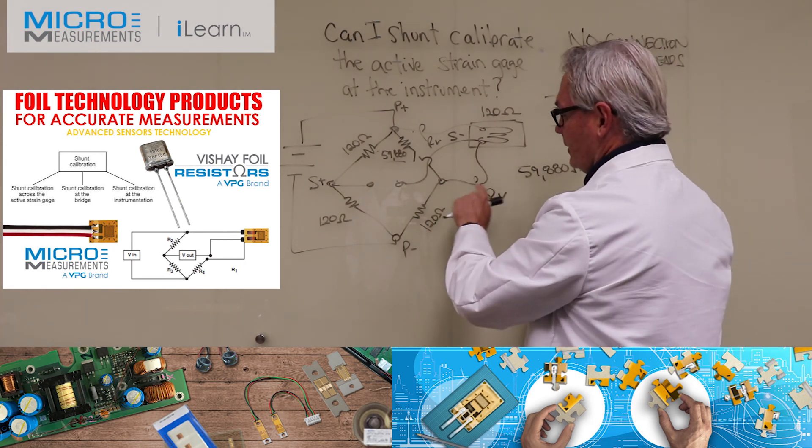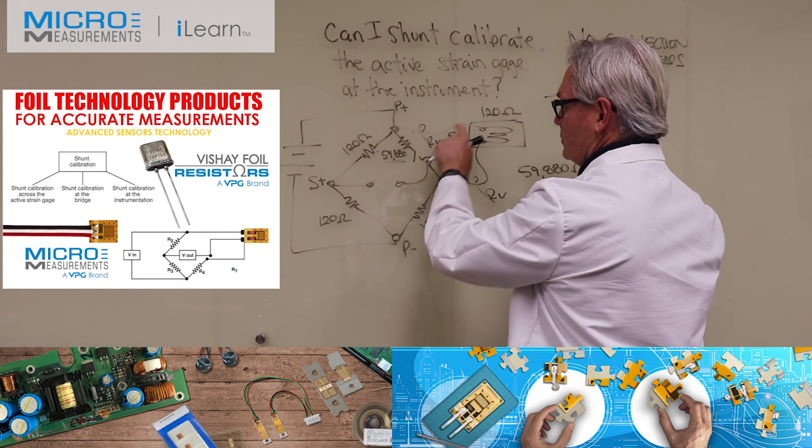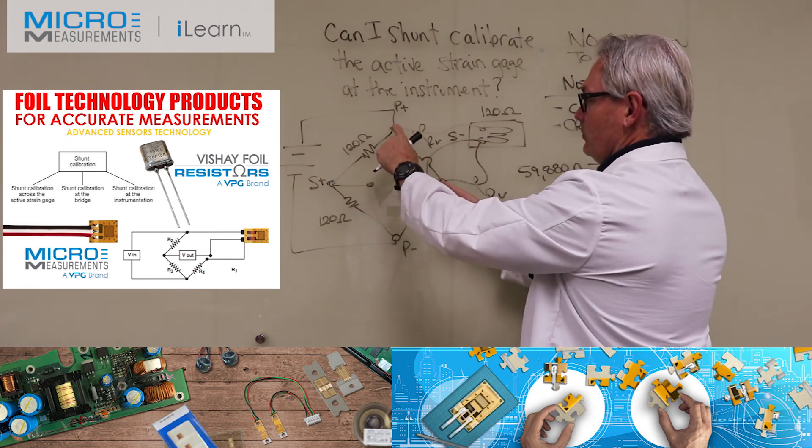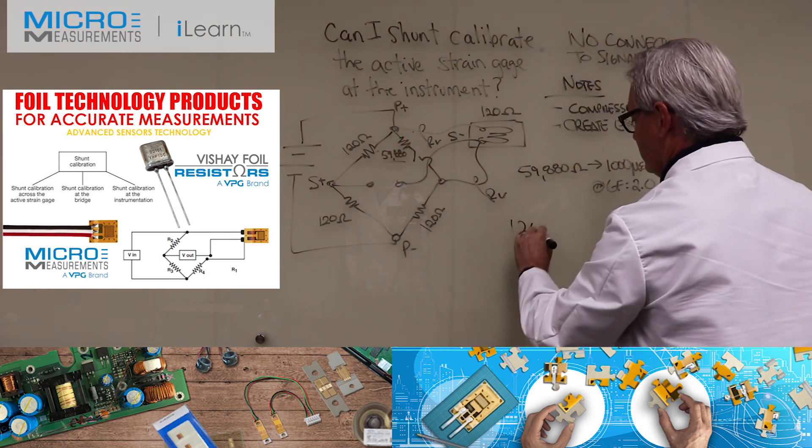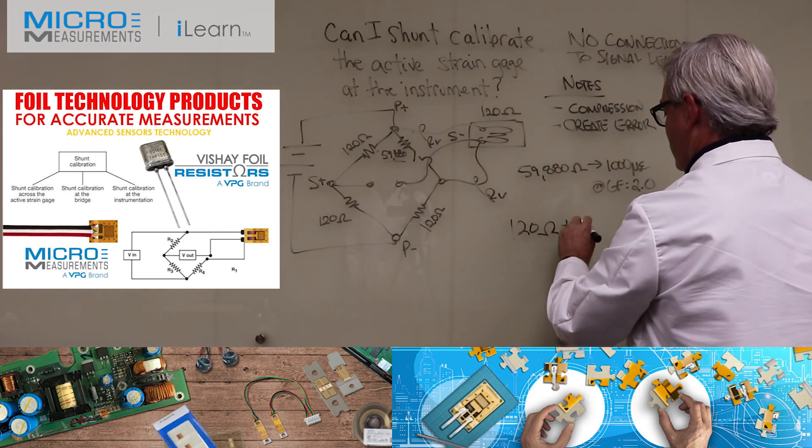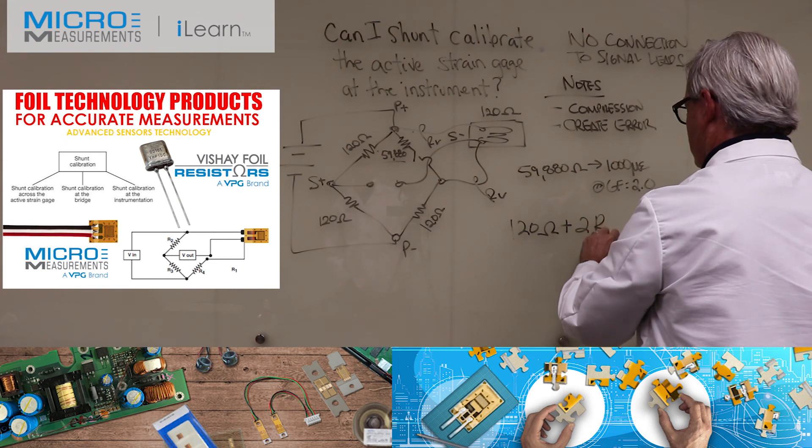In general it's a bad idea, and the reason it's a bad idea is the variability in the resistance of these two wires. Because now you're not calibrating across 120 ohms - you're calibrating across 120 ohms plus whatever two times R_sub_L is.